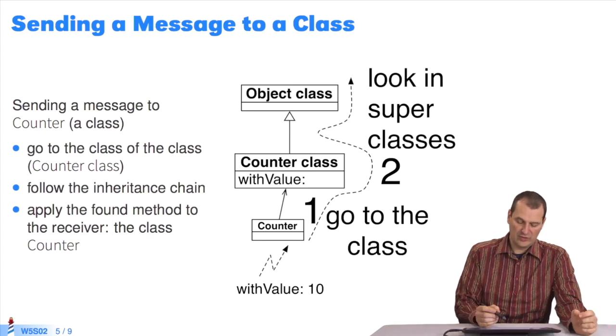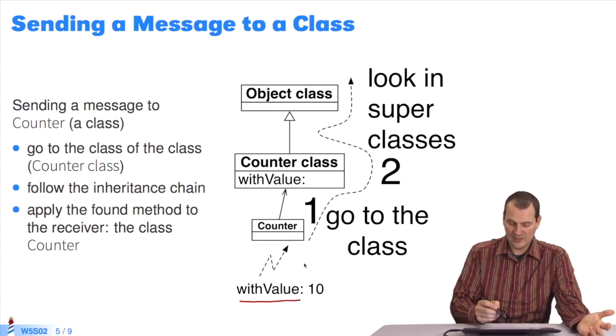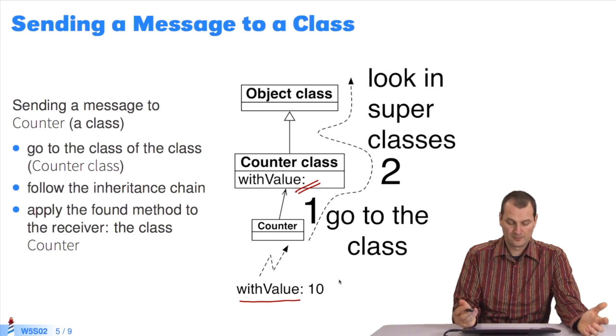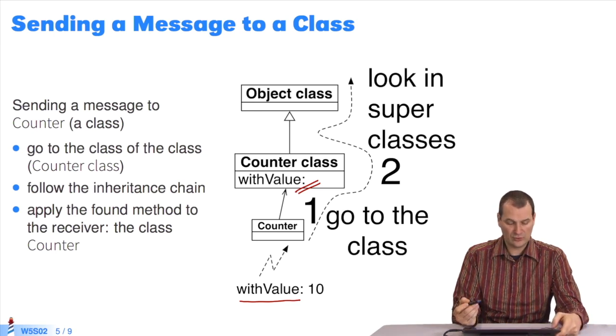When you did the exercise with the class counter and sent the message withValue to the class counter to create an instance, what happened? The class counter is instance of a class called counter class. And we looked. We used the same method as before. We looked in the receiver class. The receiver was counter. So we looked in the class counter class and found the method withValue, which we applied to the receiver and it gave us a new instance.